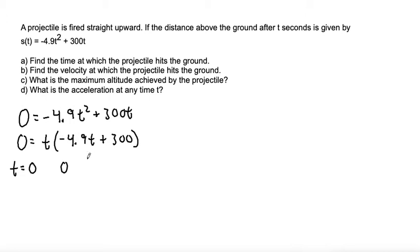So we can use the other factor, 0 equals negative 4.9 t plus 300. Moving that to the other side, we get 4.9 t equals 300.